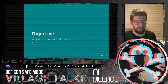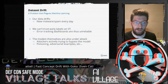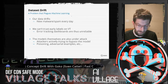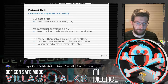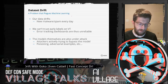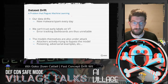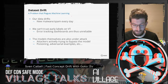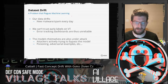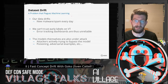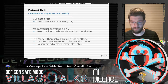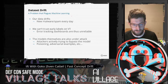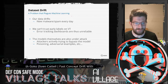So why do we care about dataset drift? Well, our data drifts. I work with malware, and there are new malware families coming out every month. There are new benign examples of software coming out every month. Every time Adobe patches Photoshop, it changes the pattern slightly and changes its location slightly in our dataset. Every single time a new piece of malware comes up, it changes the way the malware data is distributed slightly.